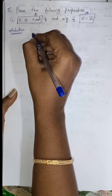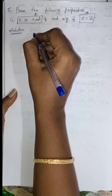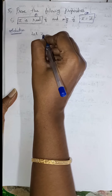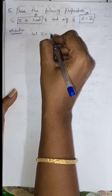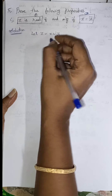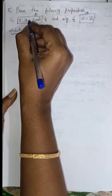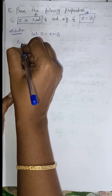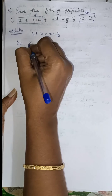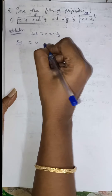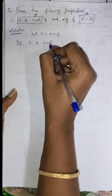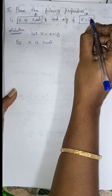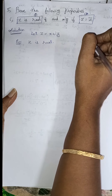Let the complex number Z equal to X plus iY. For the first condition, Z is real is given, and we have to prove Z equals Z bar.